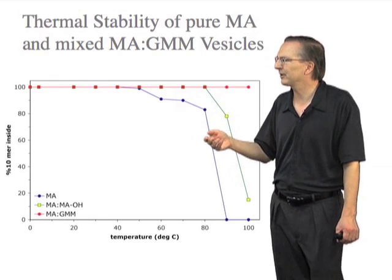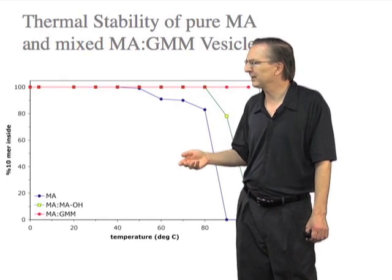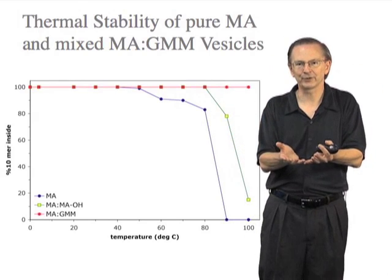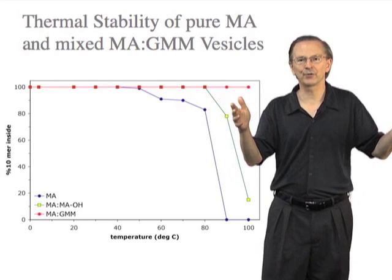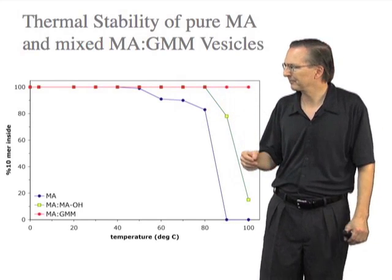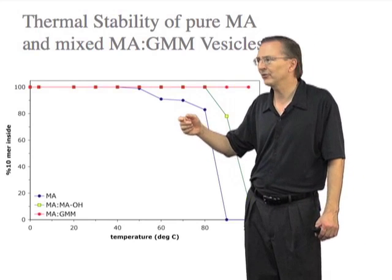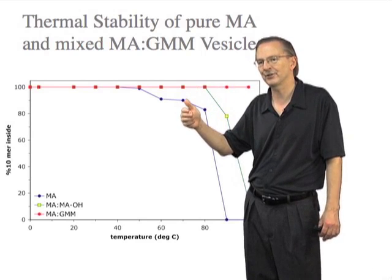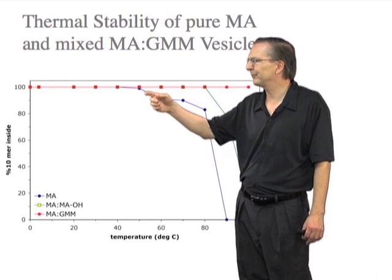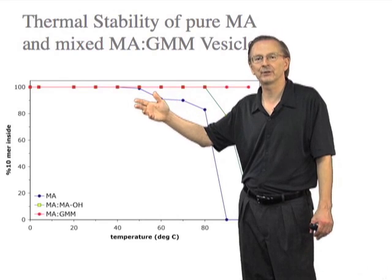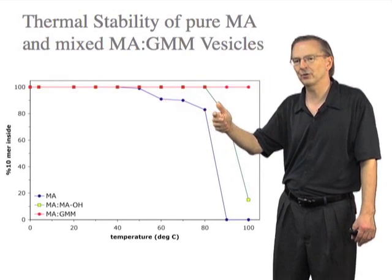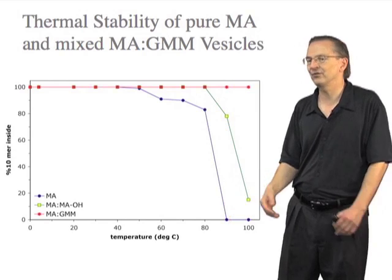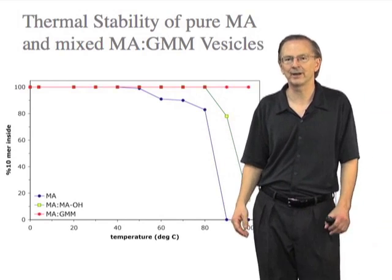In this experiment, we encapsulated a short DNA oligonucleotide within vesicles and watched it leak out over the course of about an hour. If the membrane is composed purely of myristolaic acid, this 14-carbon singly unsaturated fatty acid, you can see that up to about 50 degrees nothing leaks out over an hour. But as the temperature goes up to about 80 degrees they become more leaky, and then at 90 degrees everything has leaked out over an hour.